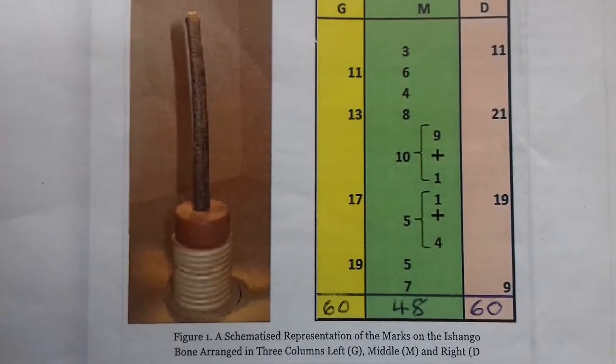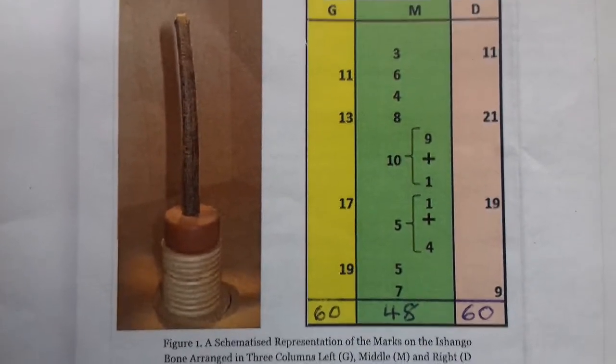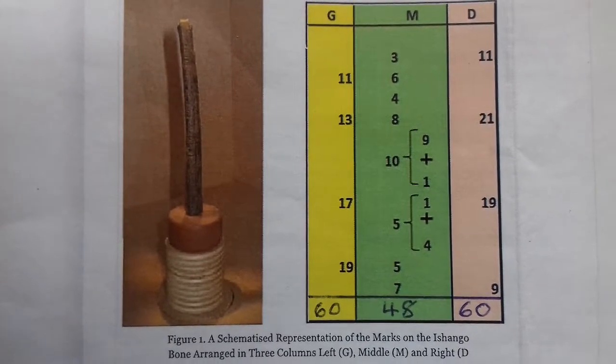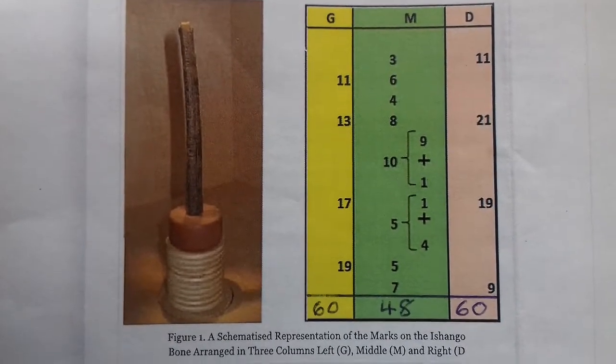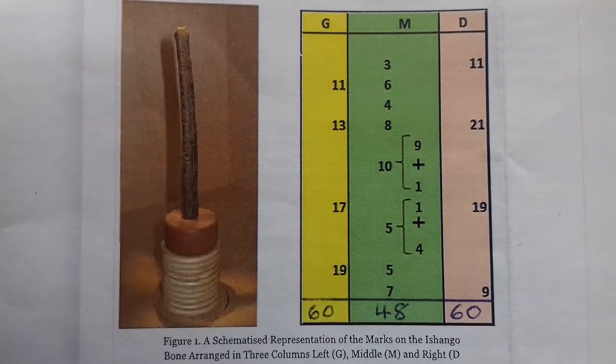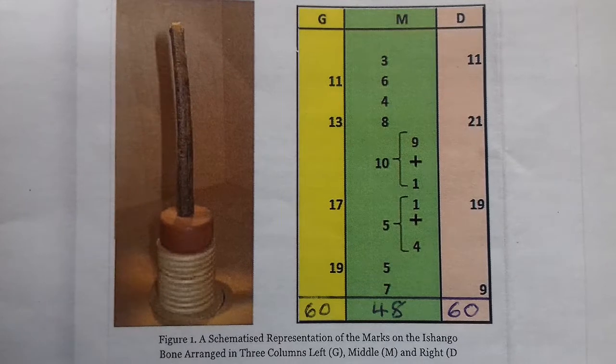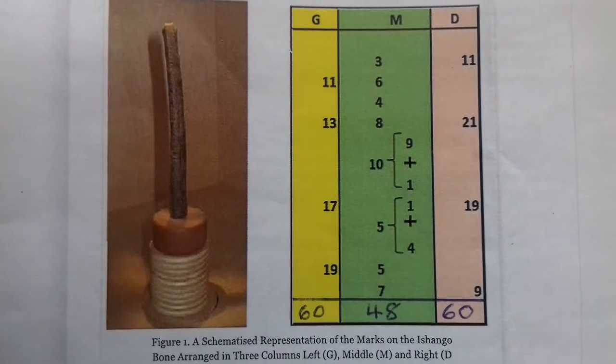If we consider a schematized representation of the marks on the Ishango bone, we see them arranged in three columns, G, M, and D, standing for left, middle, and right in French.